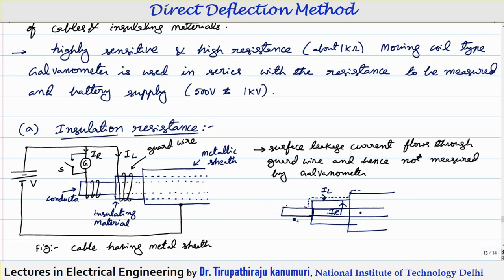If you directly connect the galvanometer and measure — for example, connecting the positive terminal here and the galvanometer directly connected — whatever current passes through the galvanometer will be the sum of IL plus IR. That means whatever current is measured by your galvanometer is the total current. Actually, we have to measure only the value of IR to know the insulation resistance.